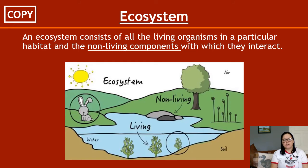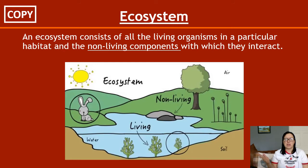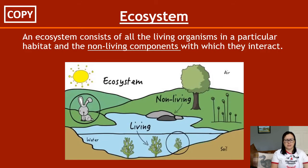Ecosystem is never defined the same way twice — a big frustration. Sometimes ecosystem is referred to as the communities and the abiotic factors. Community is all living organisms, and abiotic factors — which we'll get into later — are non-living things in an ecosystem. So we're still looking at that idea: living plus non-living equals ecosystem.